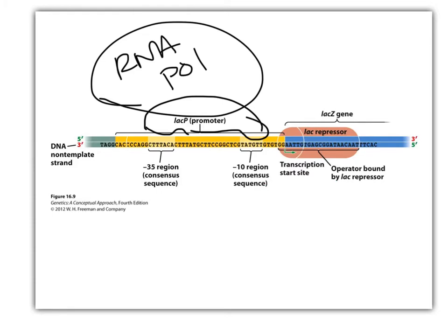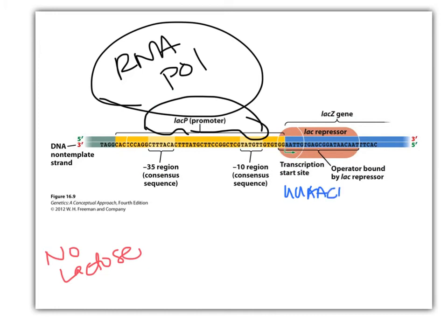The operator doesn't block RNA polymerase from interacting with the promoter at all. But when the repressor is sitting on the operator — meaning no lactose is around — it blocks RNA polymerase from getting at the downstream sequence. RNA polymerase is supposed to start complementary base pairing right at the start of the lac z gene, making the 5' end of the mRNA. But this doesn't happen because the repressor protein is sitting in the way, blocking RNA polymerase from base pairing.